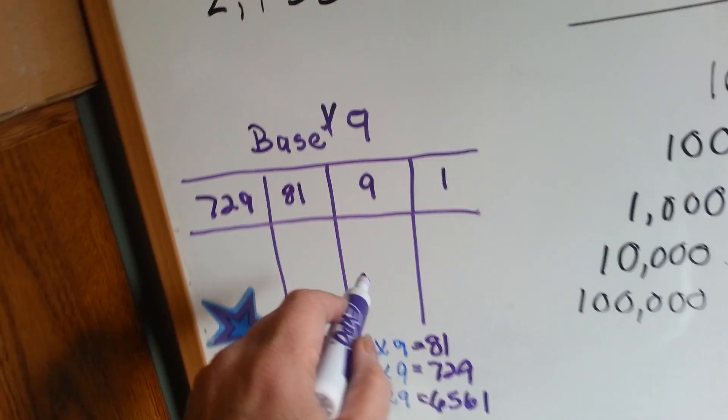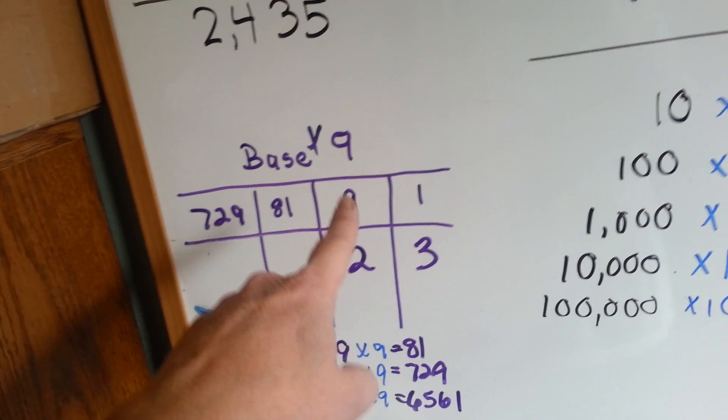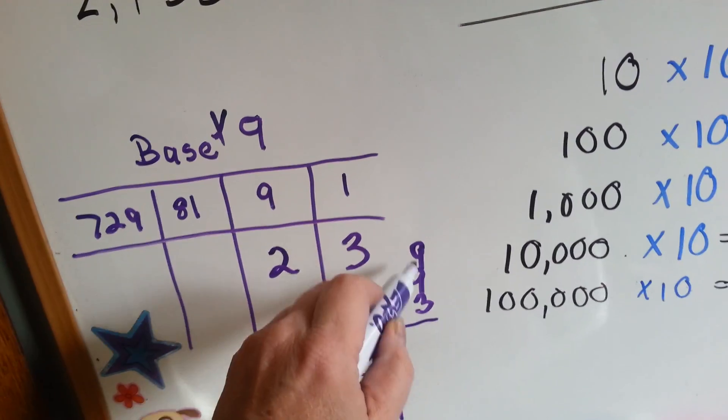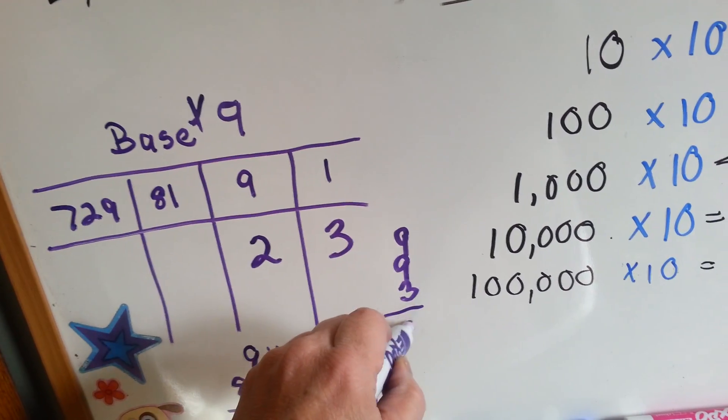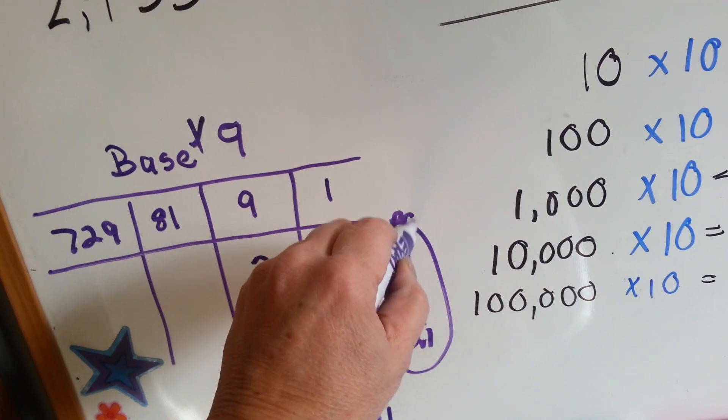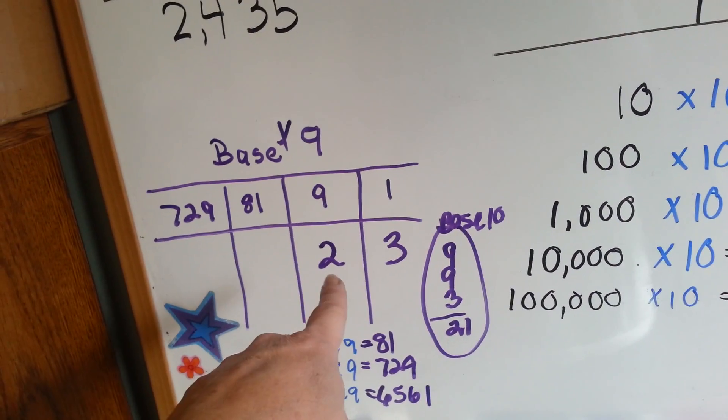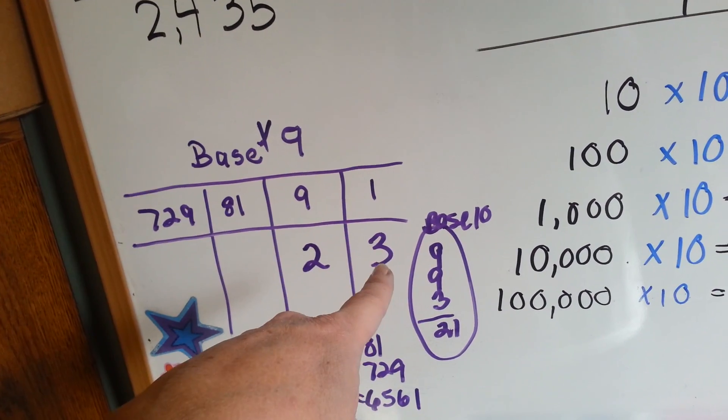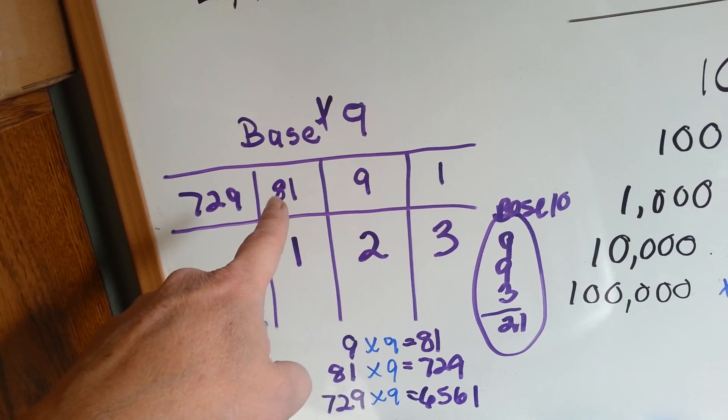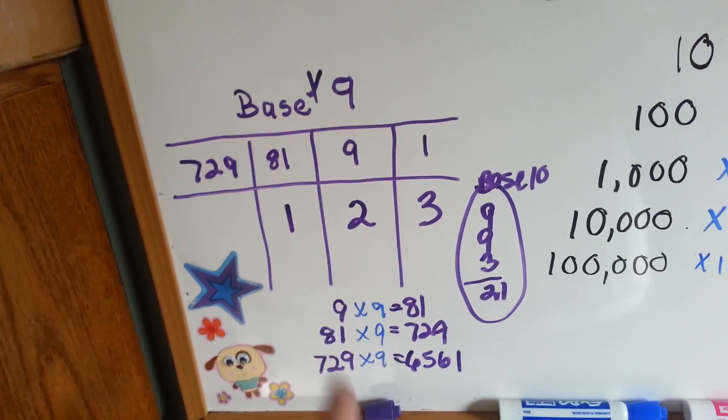So in base nine, this number means two nines and three ones. Two nines and three ones. And if you were to add that up, you'd have eighteen, nineteen, twenty, twenty-one. But that would be in base ten. In base ten, it would be twenty-one. But in base nine, it's twenty-three because that means there's two nines and three ones. If we said that there was one here, that means there's an eighty-one, two nines, and three ones. See how base nine is different than base ten?